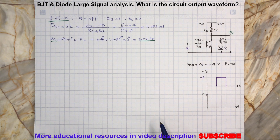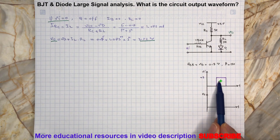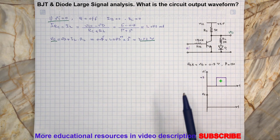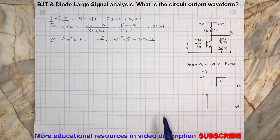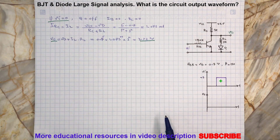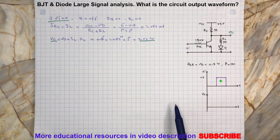Now we assume the input voltage is equal to positive 5V. As you probably noticed, this will forward bias the transistor's base-emitter junction and will turn on the transistor. In this case, we will have a current flowing through resistor RB and the base, as well as the collector of the transistor. Let's calculate the base current.